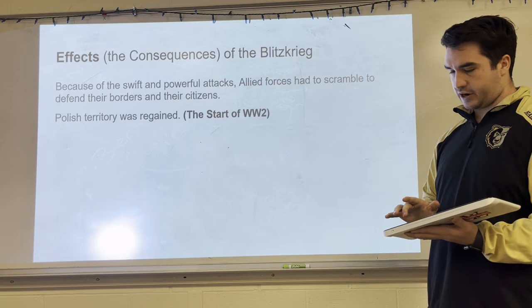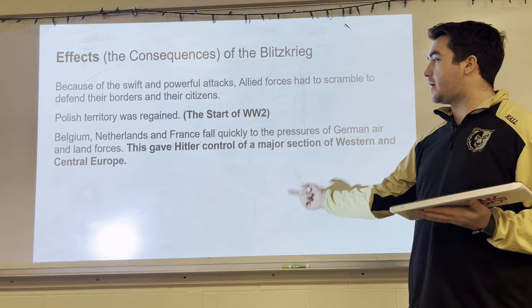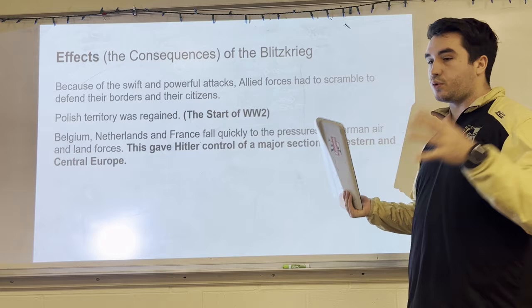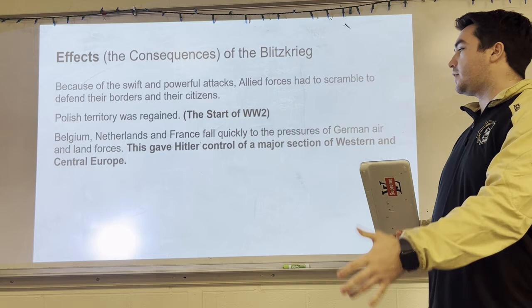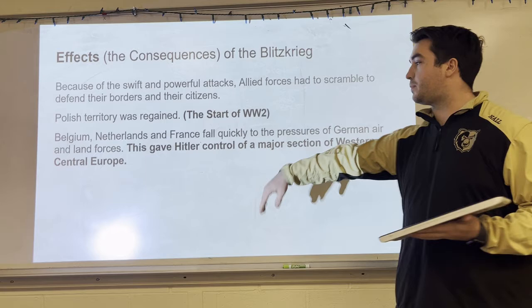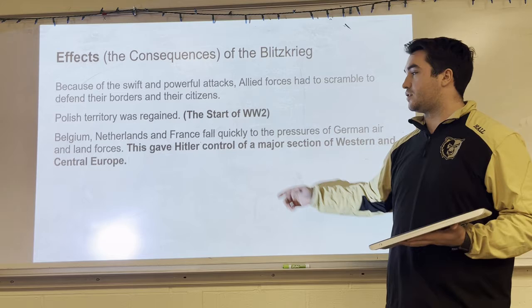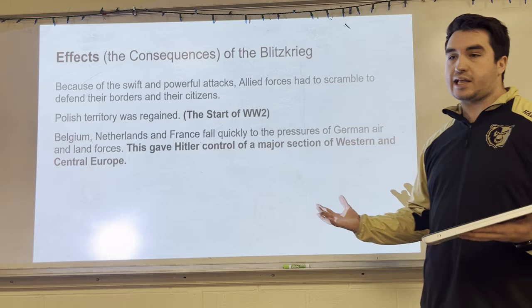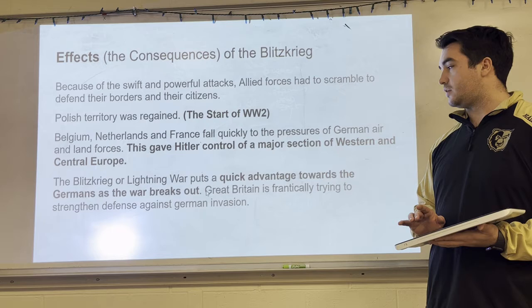Using blitz tactics, Germany retook Polish territory, and subsequently Belgium, the Netherlands, and France fell quickly to the pressure of German air and land forces — that total, complete push in one area. This gave Hitler control over a major section of western and central Europe. All the land taken by the Treaty of Versailles was reclaimed, and now Belgium, the Netherlands, and France were falling quickly to the blitz.